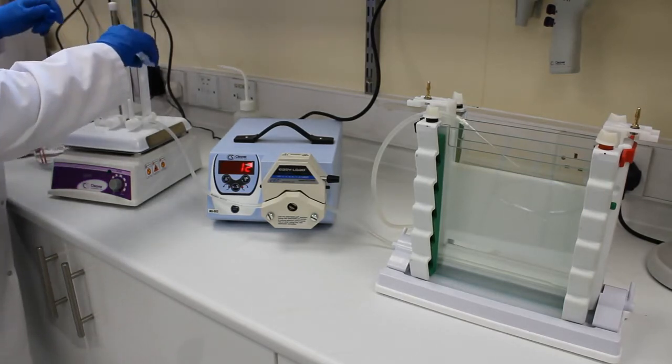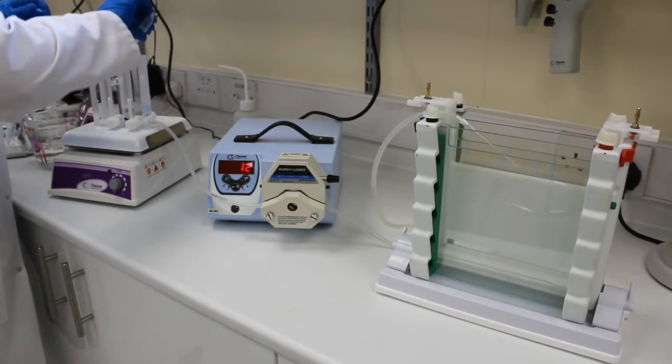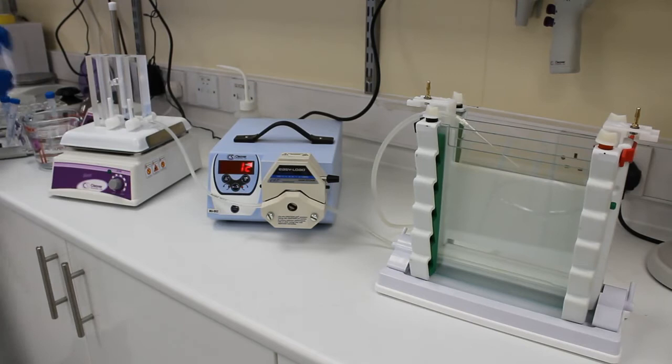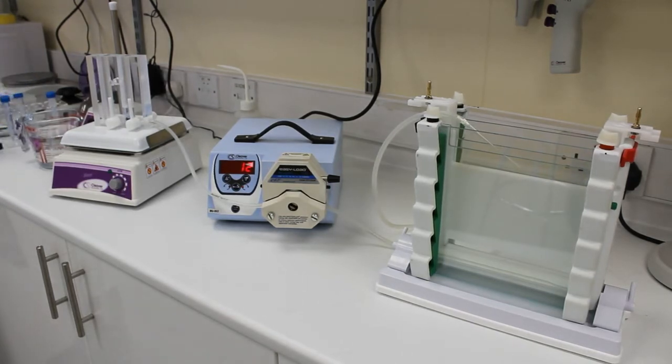So we've got our first solution going into the first well of the gradient mixer. I'm going to turn on that magnetic stirrer. So this is the high denaturing solution and we've also got an amount of DNA dye in there which is going to indicate the gradient of the gel once it's been poured.